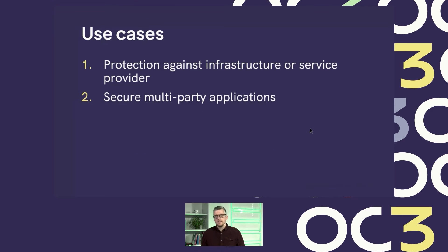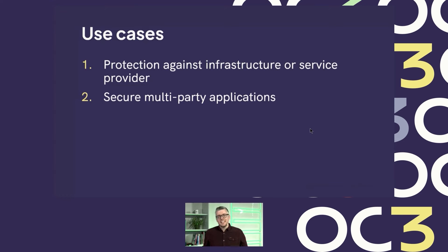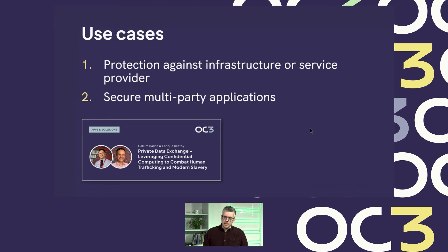The second class of use cases is secure multi-party applications. Confidential computing allows you to create what is called a data clean room, where multiple parties can securely share and pool data without actually revealing the data to each other. We have a very interesting talk today by an NGO called Hope for Justice, explaining how they're using this clean room pattern to share data with other NGOs in order to combat human trafficking and modern slavery.